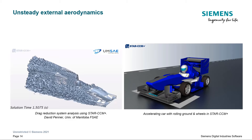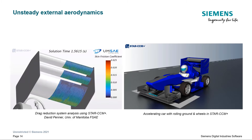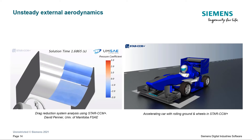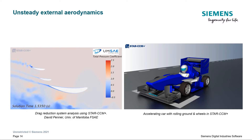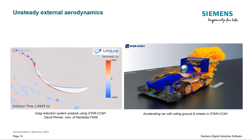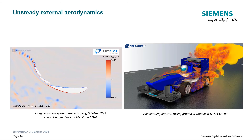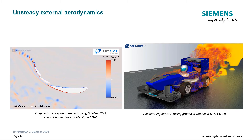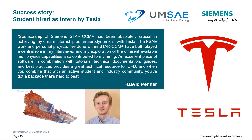If your team wants to look at how flow behaves over time across your vehicle, that can easily be accounted for. The University of Manitoba Formula SAE team did this to evaluate the performance of their drag reduction system, studying vehicle behavior when accelerating from the start line and accounting for tire rotation over time. The student who conducted the active aero simulation was hired as an intern by Tesla and was quoted saying the software was absolutely crucial in achieving their dream internship as an aerodynamicist.